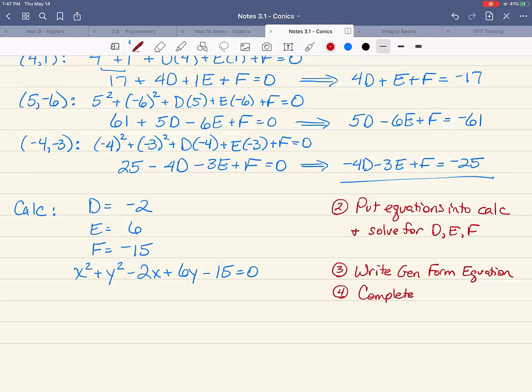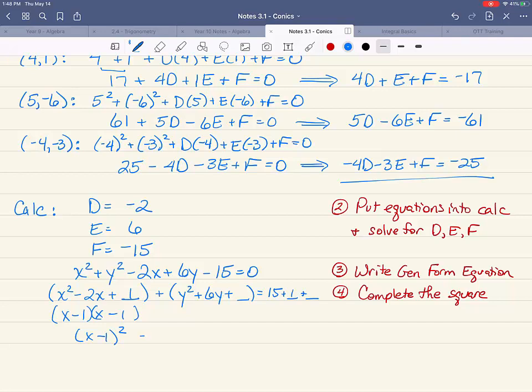But usually they'll ask you to go on and find the center and the radius. So step four, if necessary, is to complete the square to find the center and the radius. And we did this in the first circles video. So we put the x squared minus 2x plus blank together in a bracket. Same with the y's: y squared plus 6y plus blank equals fifteen plus blank plus blank. So complete the square. The two numbers in the bracket will be minus one and minus one. So negative one times negative one is positive one, goes in the blank, which makes our first term x minus one, the quantity squared.